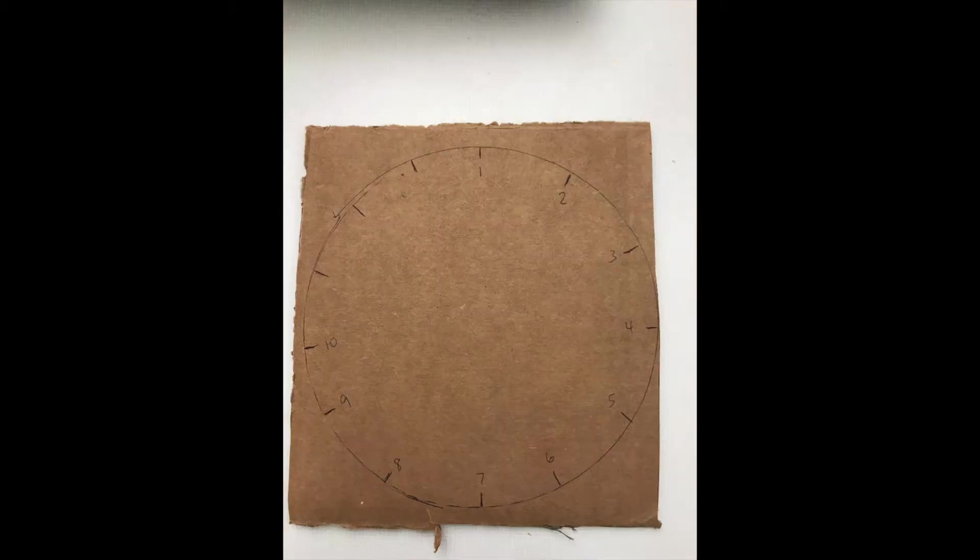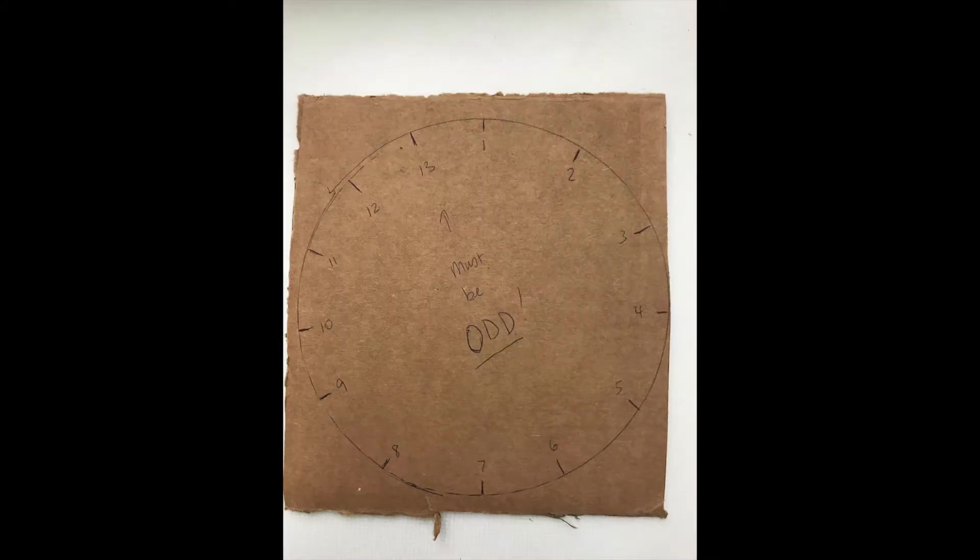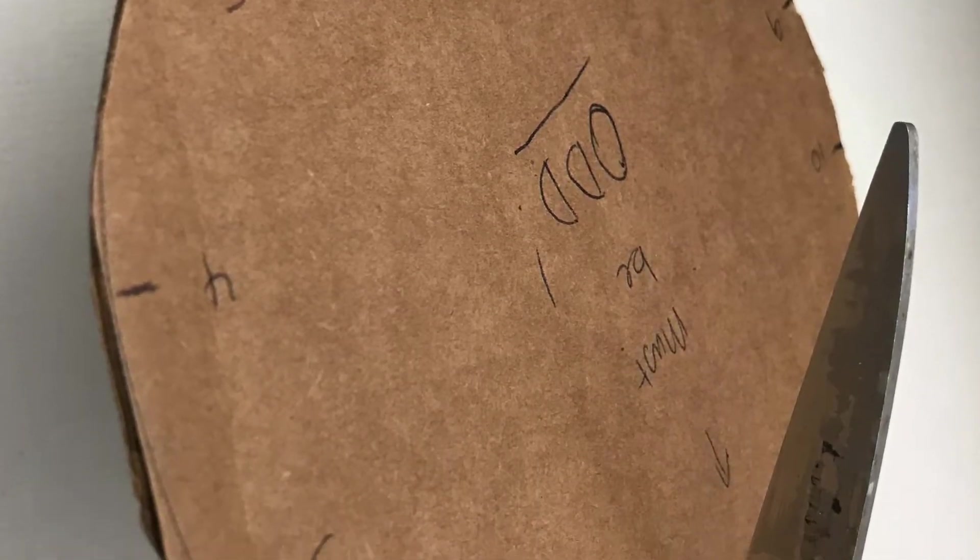It really could be other numbers as well, but that would help your loom look very good. And then you can go ahead and cut out your circle.